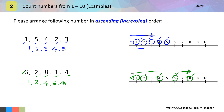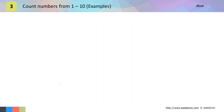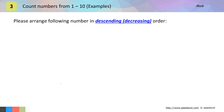We have seen how to arrange numbers in ascending order. Now we will arrange numbers in descending order or decreasing order — that means bigger number will come first and then smaller number. We have our first example.